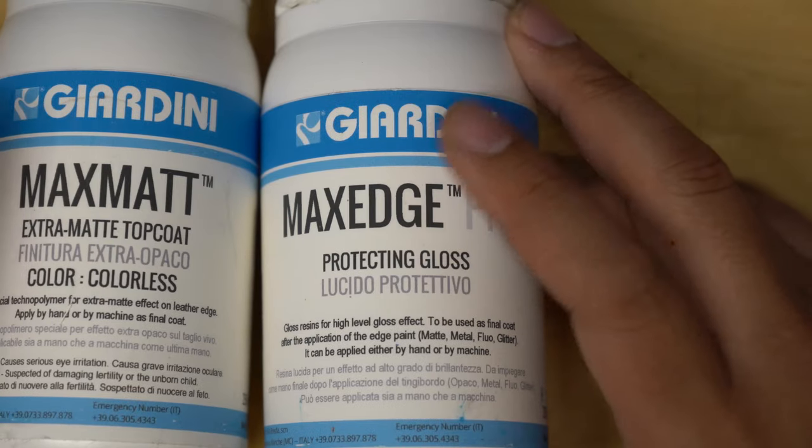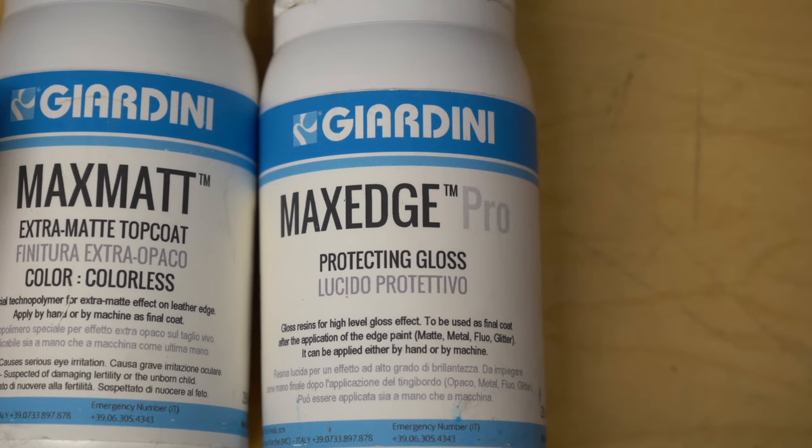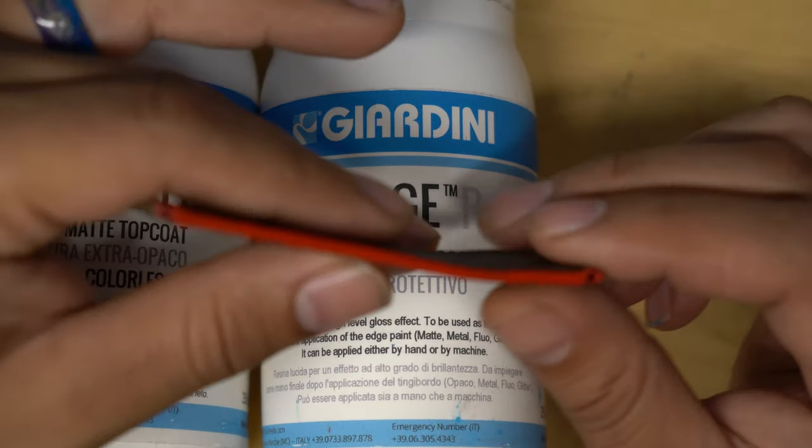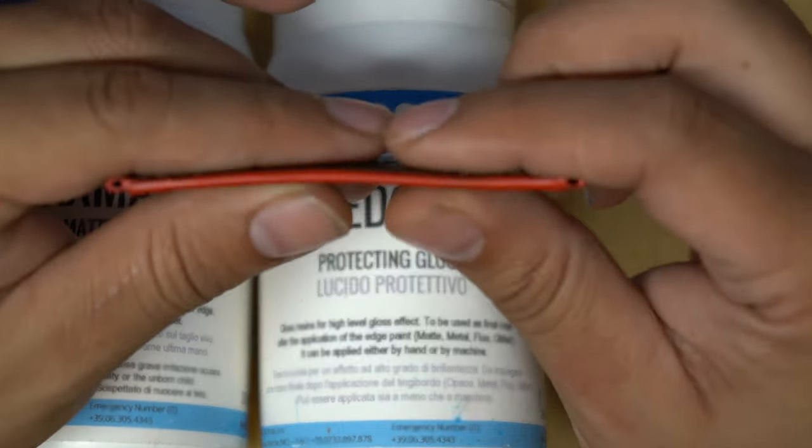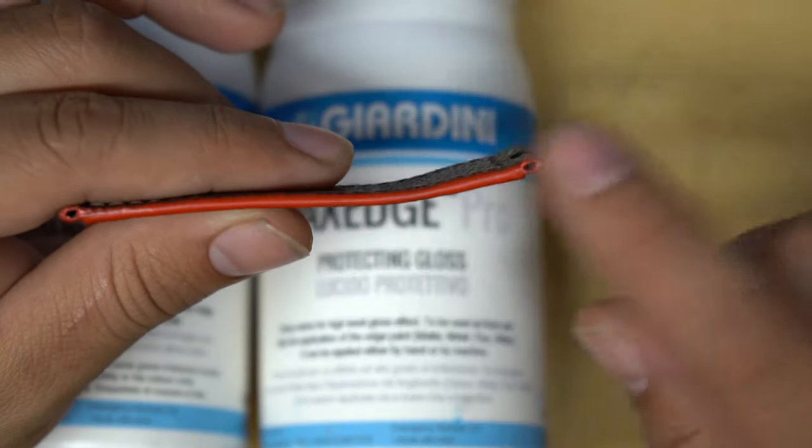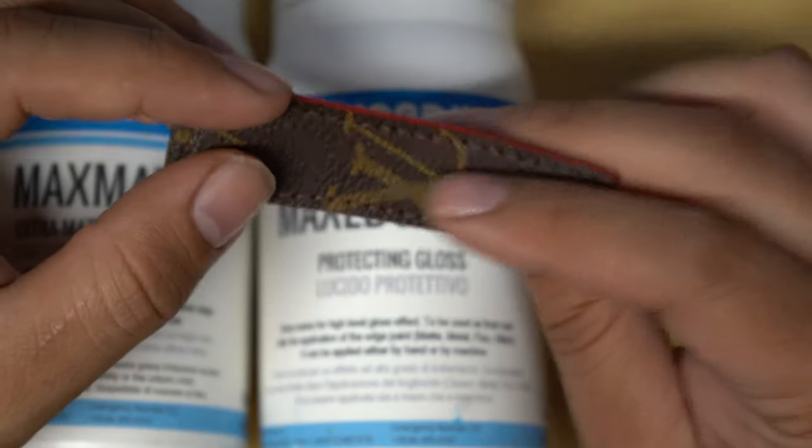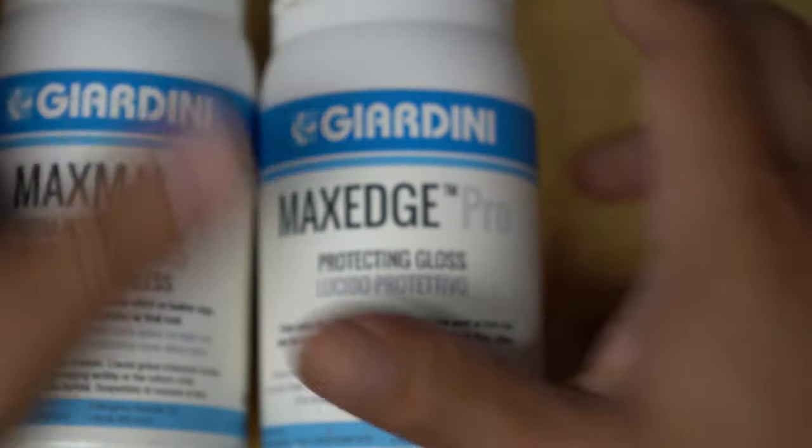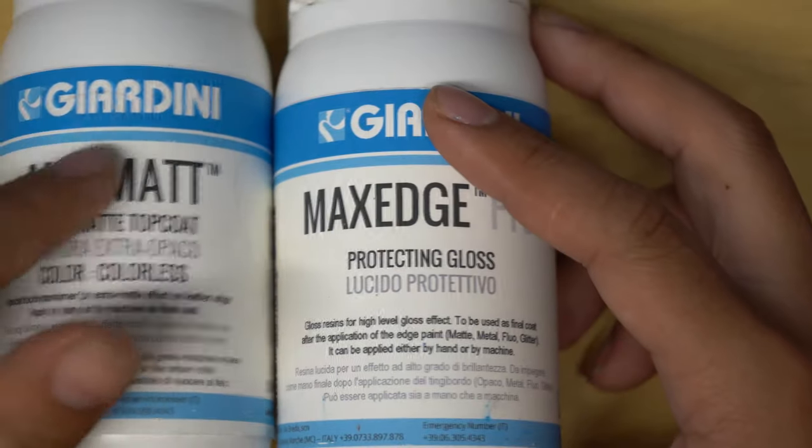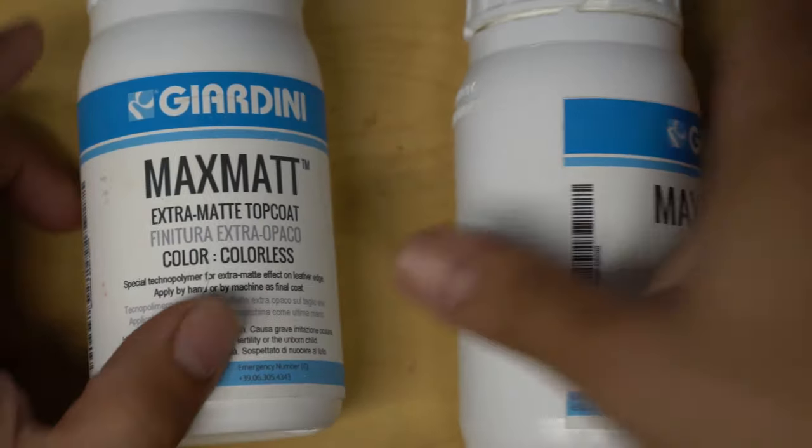I just made this leather watch band with Louis Vuitton material. I did the finisher in red. If you haven't seen this video, I'm gonna link it so you guys can take a look at it. What I'm gonna be doing is putting the Max Matte top coat on the shorter strap.